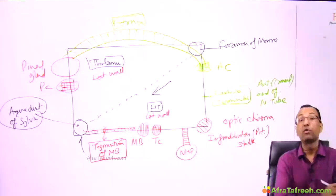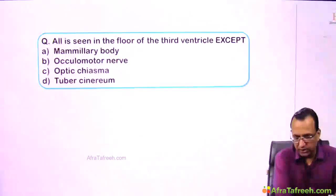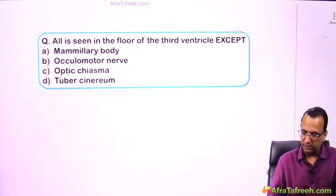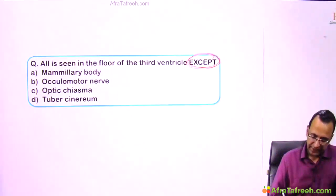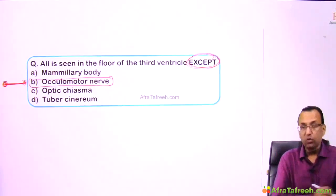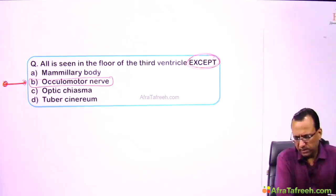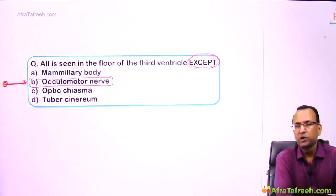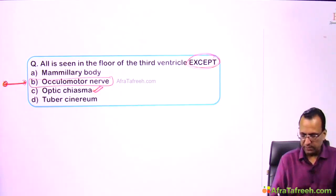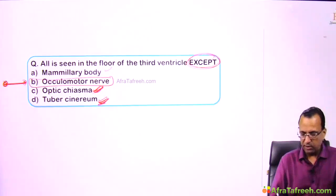A question asks: which structure is NOT seen in the floor of the third ventricle? The answer is the oculomotor nerve — because it is not at the floor of the third ventricle. The correct floor structures from anterior to posterior are: optic chiasma (most anterior), then tuber cinereum, then mammillary body, and tegmentum of midbrain posteriorly.